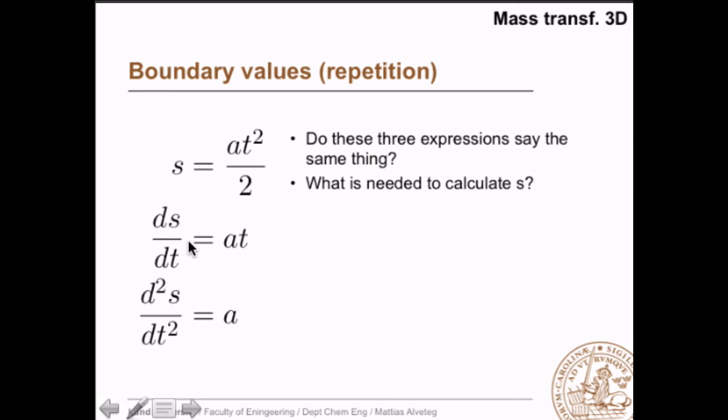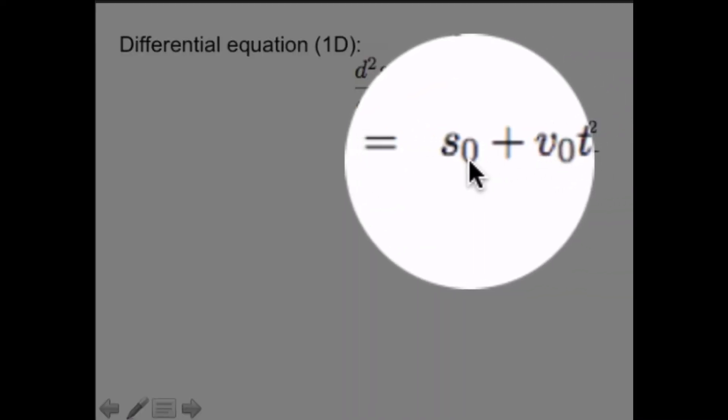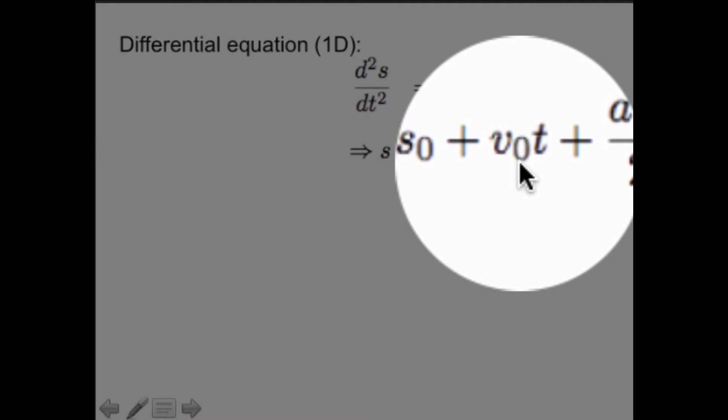In this equation, however, you have the derivative of the distance equals at. If you integrate that, you will get an integration constant, and if you integrate this one, you will get two integration constants, like this, s0 and v0. The reason why I point this out is that integration constants have physical interpretations. So in this case, the interpretation of the integration constants, s0 and v0, is that s0 is the distance traveled at time zero, and v0 is the velocity at time zero.